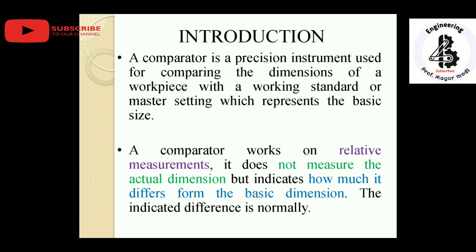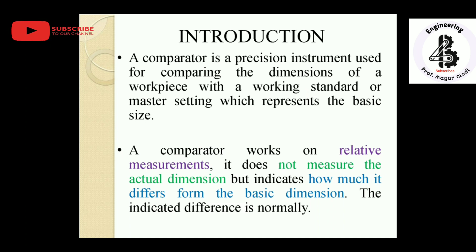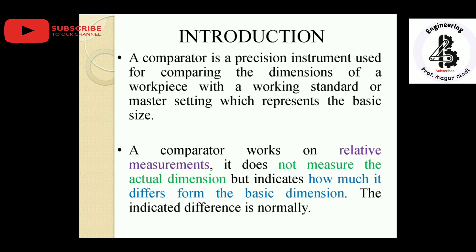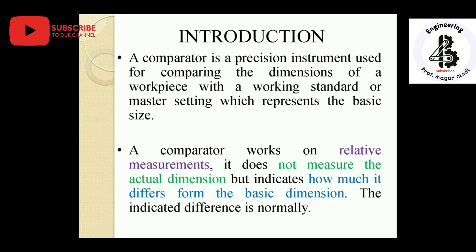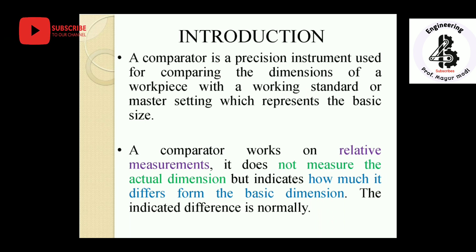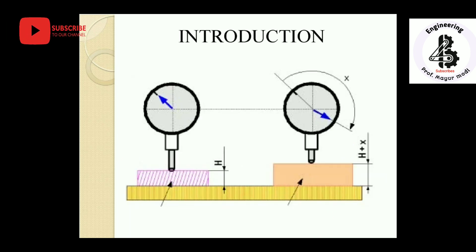A comparator compares the dimensions of a workpiece with a working standard, or master setting, which represents the basic size. It works on relative measurements — it does not measure actual dimensions, but indicates how much the workpiece differs from the basic dimensions. It does not give a direct value, just the difference with respect to the standard measurement.